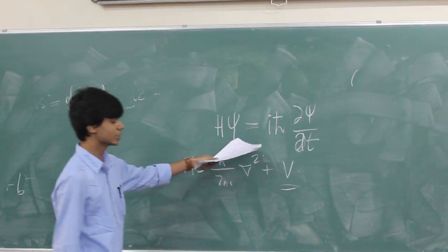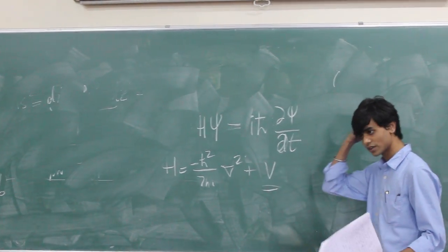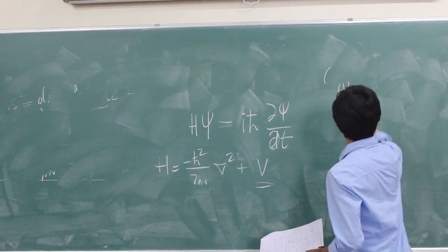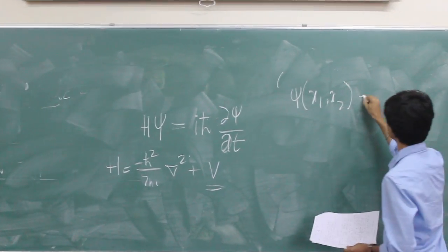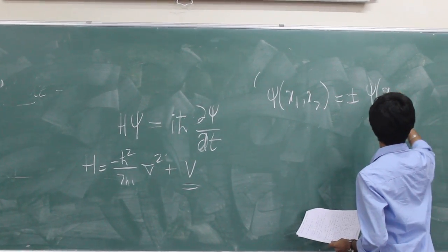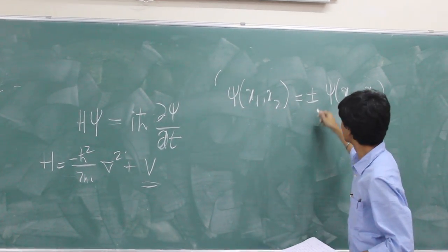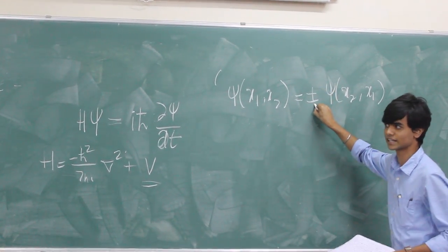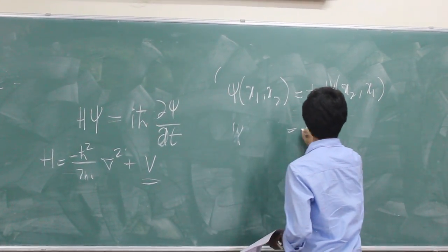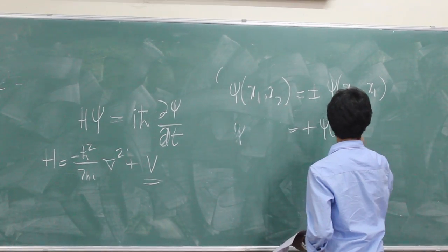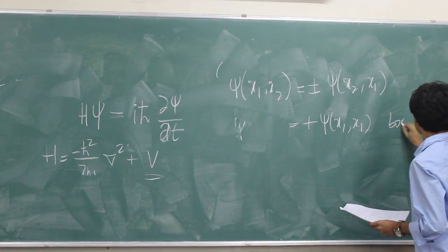Now this Schrödinger equation has, in specific, two solutions that we need to look at. Although it has many solutions for the hydrogen atom, we'll look, in general, one of the generalized solutions, which is psi of x1, x2, equal to plus or minus psi of x2, x1. This is one of the solutions for Schrödinger equation. If you see a plus and minus sign here, so for different signs, we get different answers. If this was equal to plus psi of x2, x1, we call them bosons.